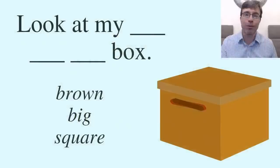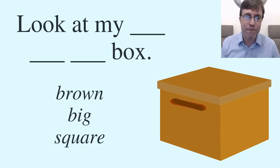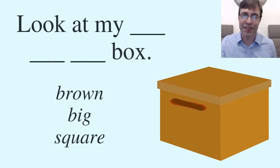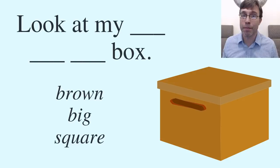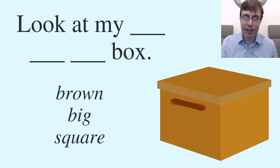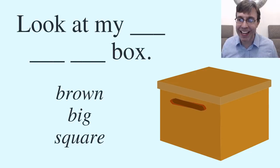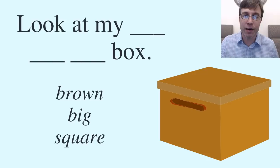This next one is a little more challenging because now we have three adjectives. Look at my box — the three adjectives are brown, big, and square. Brown is color, big is size, and square is shape. This one is a little trickier, especially because shape and color can be easily confused. But remember, looking back at our list, the order is size, then shape, then color.